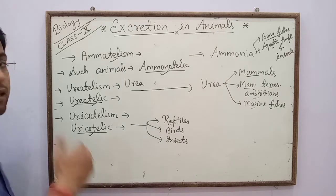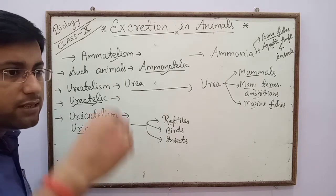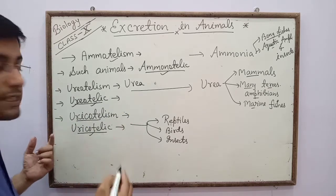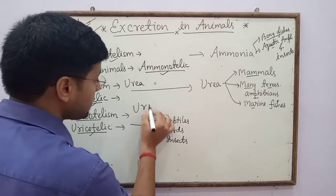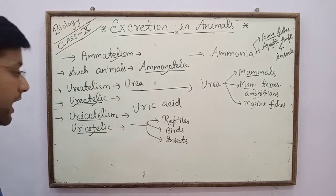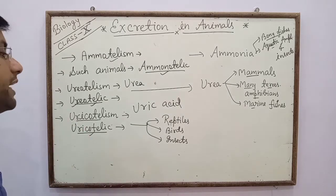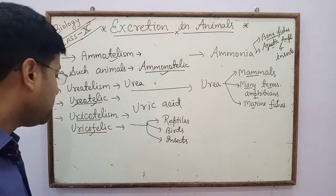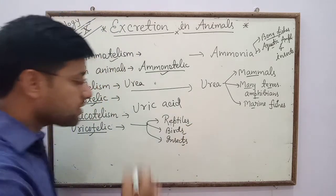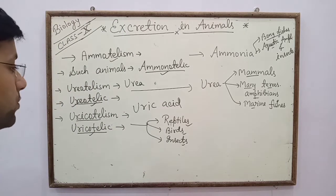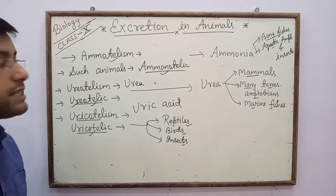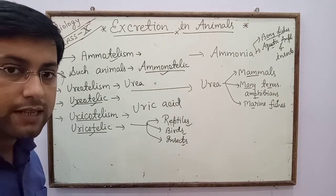Uricotelic animals excrete uric acid in semi-solid form. The process of excretion of uric acid is called uricotelism, and the animals that excrete uric acid as their excretory product are called uricotelic animals. Examples include reptiles, birds, and insects, as they excrete only uric acid as their toxic substance.